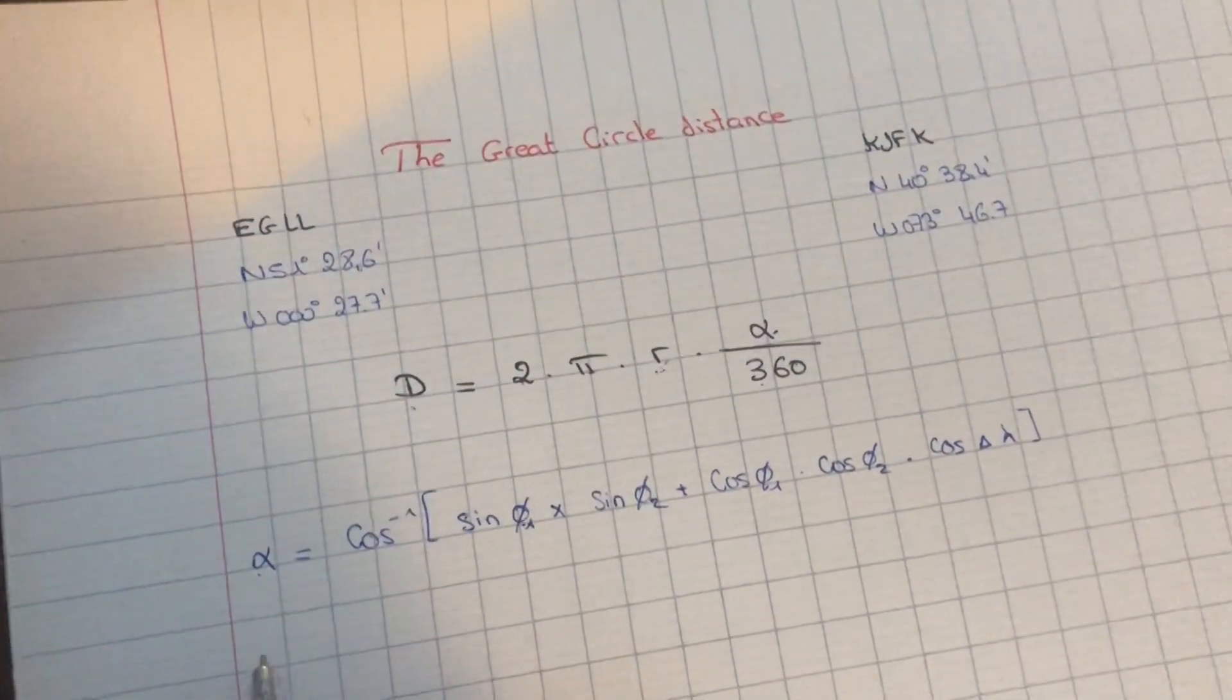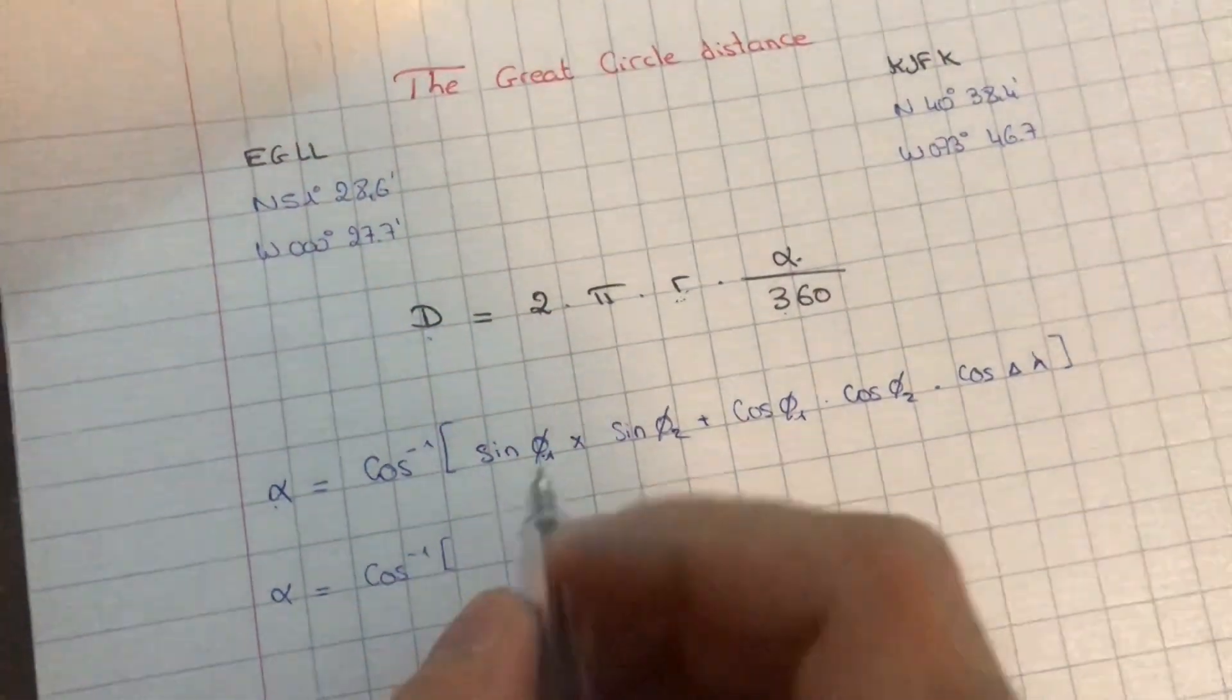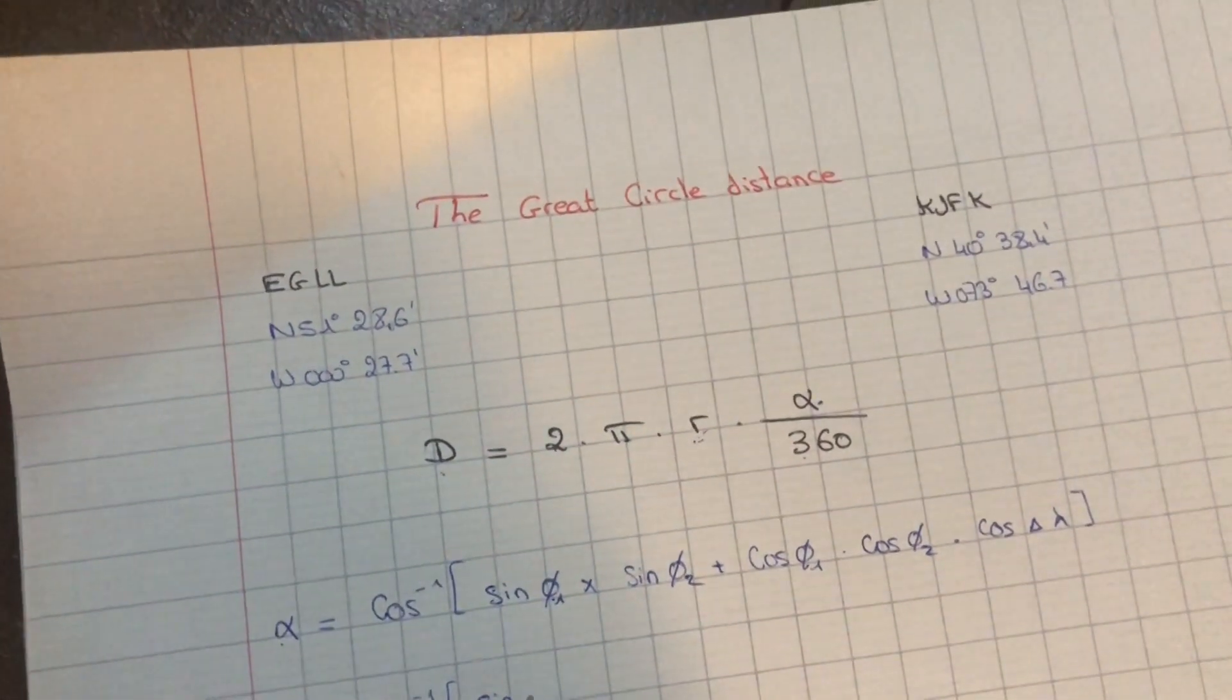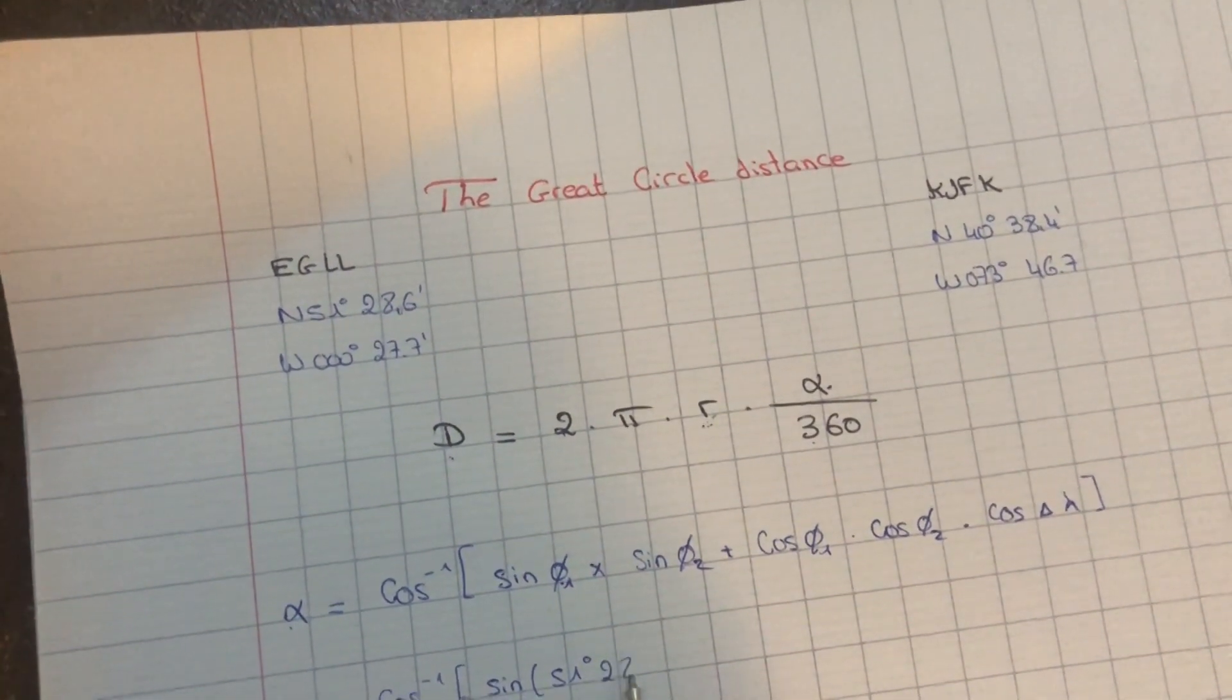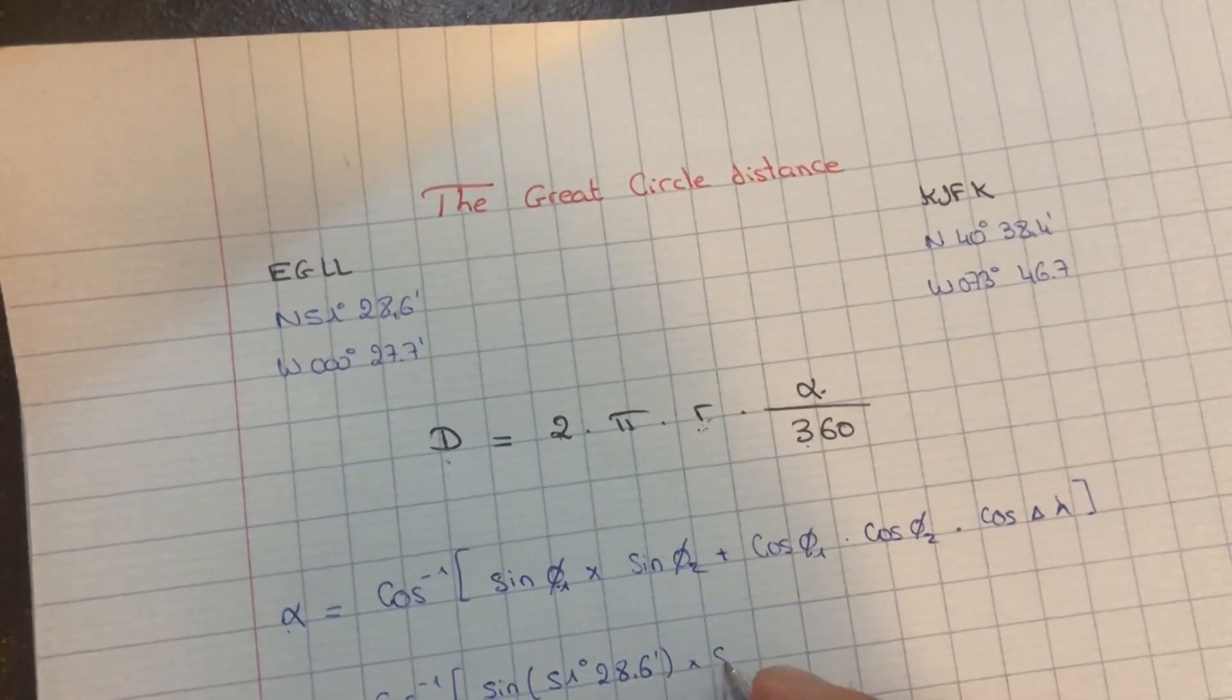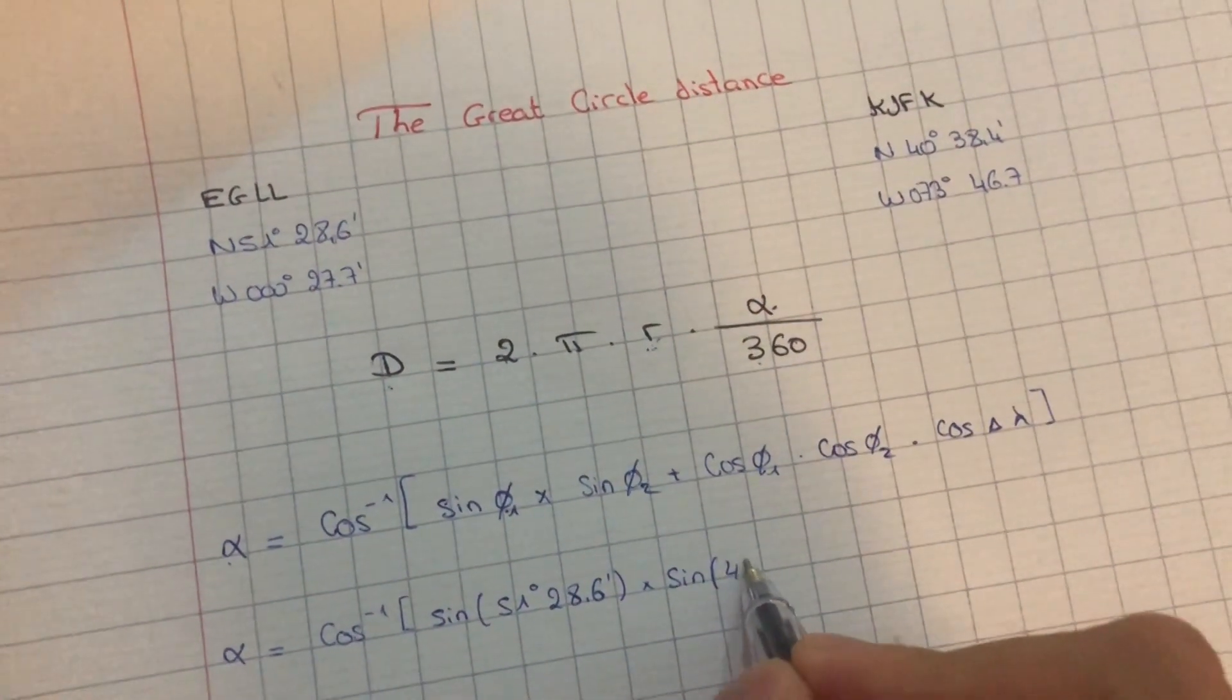Okay, okay, so we have the inverse cosine of sine first latitude, which is EGLL, 51 degrees 28.6 minutes, then sine of sine of second point, 40 degrees 38.4 minutes